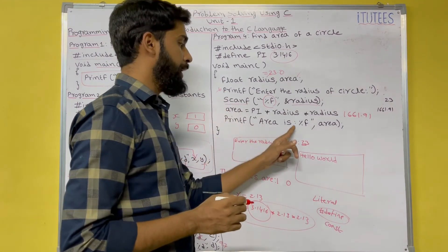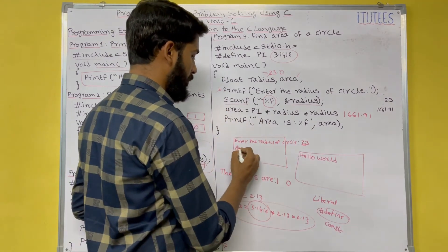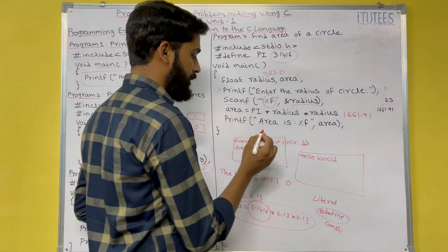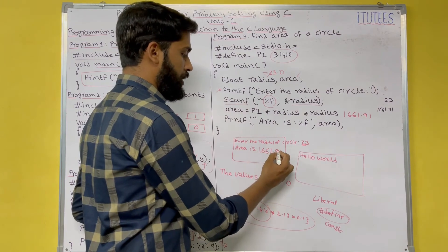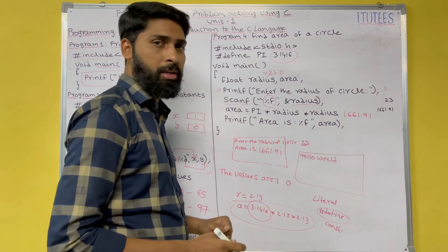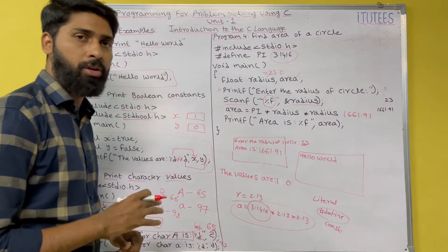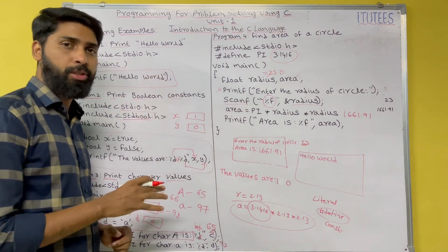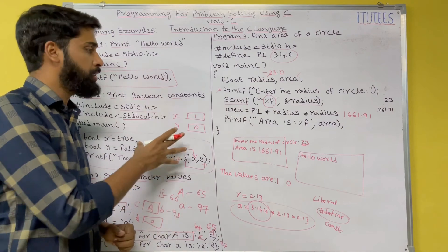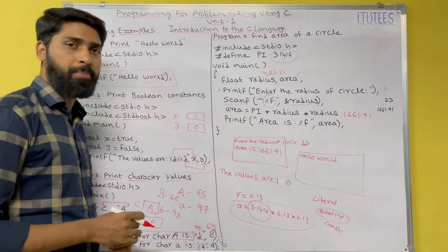We get 1661.91. That is stored in this area variable. Printf, area is. Now, it displays area is percentage f. What is the area? 1661.91. So, in this way, you are going to solve the program. For better understanding of this course, you try to execute these programs on your computer.